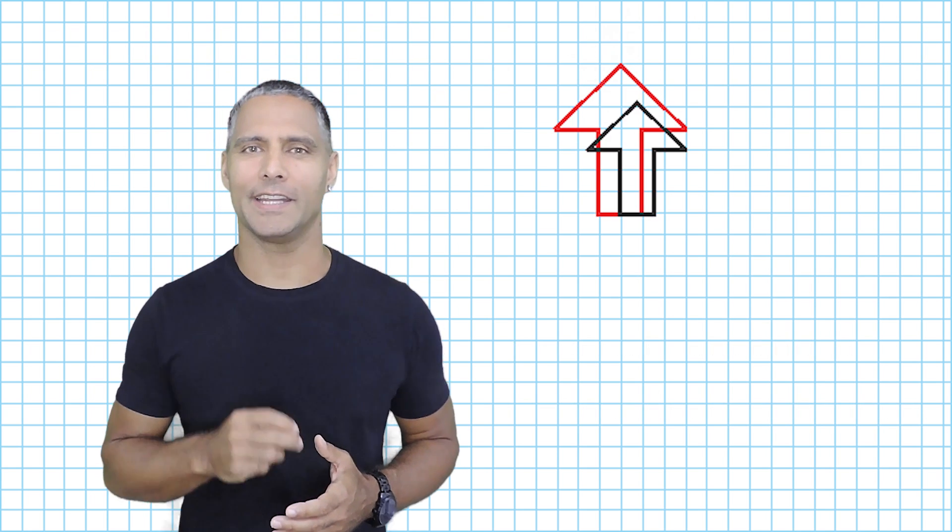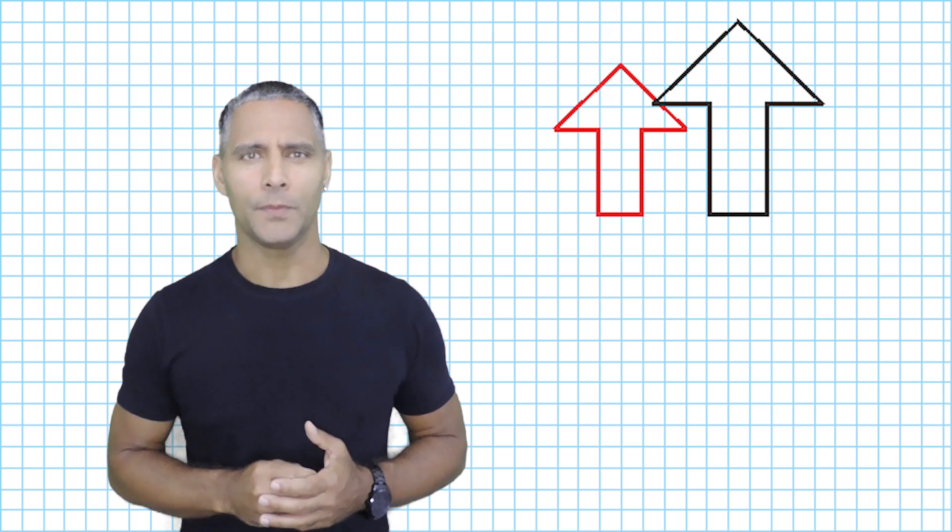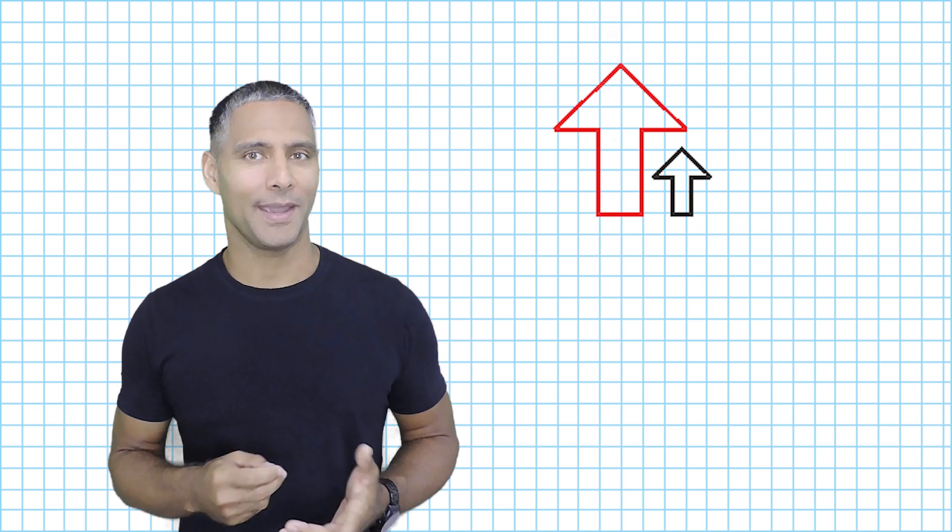Now, let's take a look at an example of a non-rigid transformation. If you look at the arrow on the screen, we can see that it is shrinking and expanding. This kind of transformation is called a dilation.